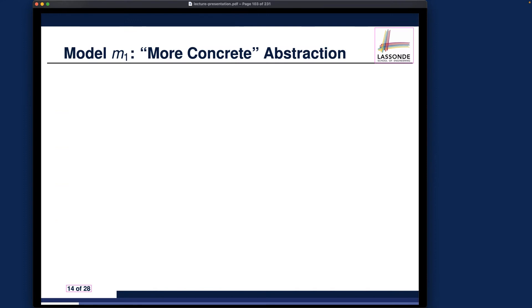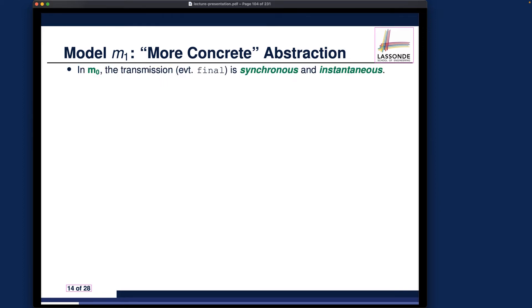Let's move on to the first refinement for our FTP system. Before introducing more concreteness into our model, let me quickly recall what we achieved from the initial most abstract model M0. In M0, we modeled the transmission as very magical in the sense that it is synchronous and instantaneous. Synchronous means the entire file is transmitted from the sender side to the receiver side without being broken into pieces, and instantaneous means that as soon as the final events occur, the transmission is simply done.